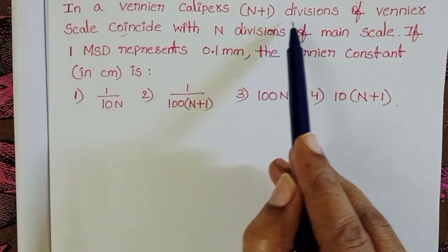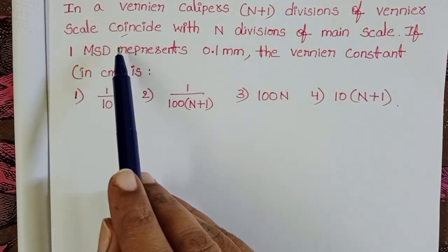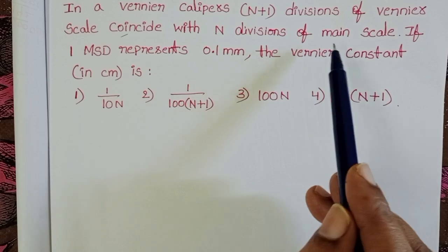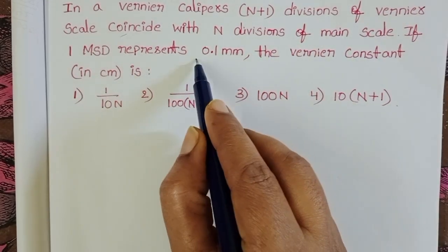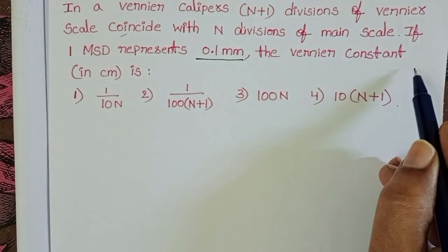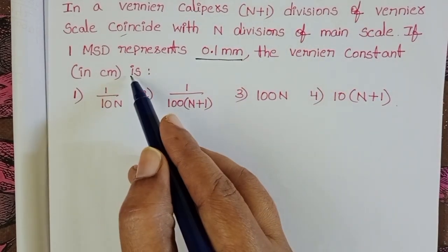In a vernier caliper, (n+1) divisions of vernier scale coincide with n divisions of main scale. If 1 main scale division represents 0.1 mm, the vernier constant in cm is: